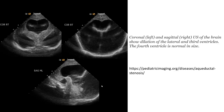This is the coronal and sagittal ultrasound of the brain. There is dilation of the lateral ventricles and septum pellucidum; the aqueduct is normal size, which is an indication for aqueductal stenosis.